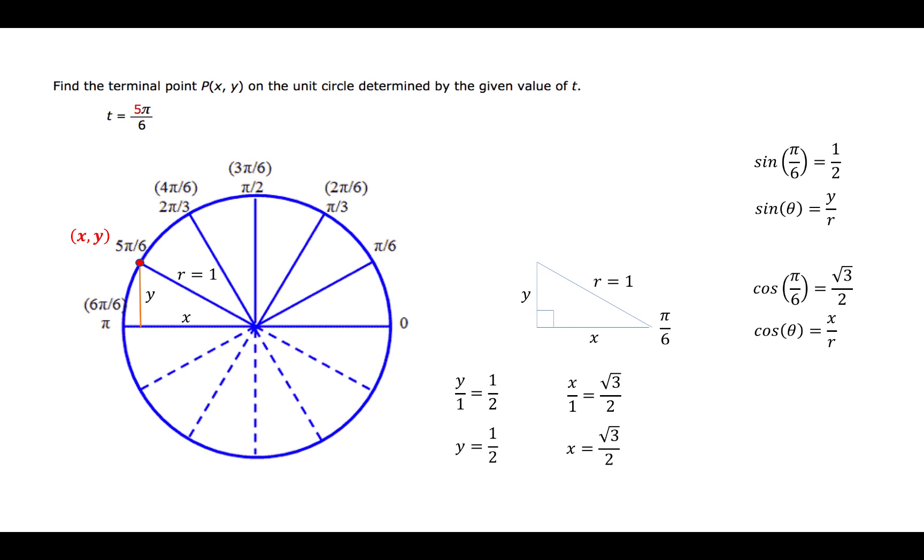Since our point is in the second quadrant, the x coordinate will be negative and the y coordinate will be positive. So the coordinates of this point are negative square root of 3 over 2, 1 half.